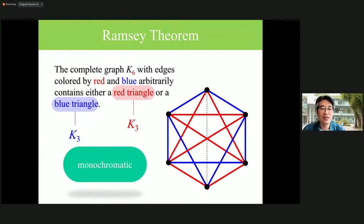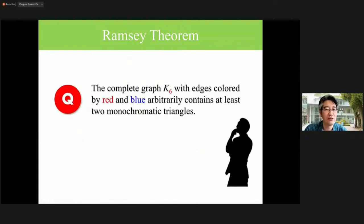We can say if there are six or more vertices and joined by the blue and red edges arbitrarily, then always we can find a monochromatic triangle. I have a question, just a problem for exercise. A complete graph K6 with edges colored by red and blue arbitrarily contains at least two monochromatic triangles. We have already found one monochromatic triangle, so please find one more, another one. But this is just an exercise for beginners, so I recommend you consider this problem after our workshop.